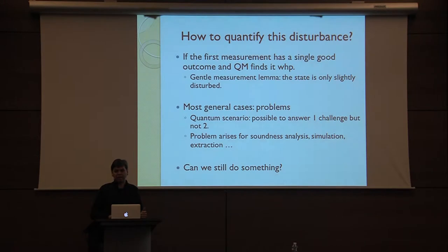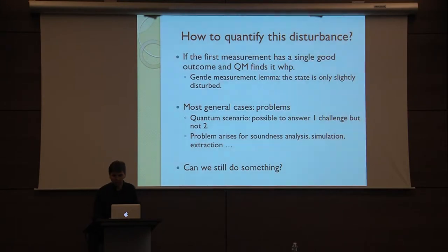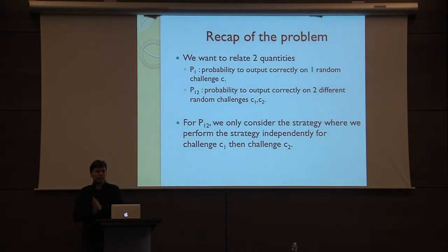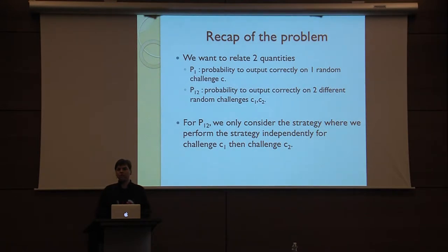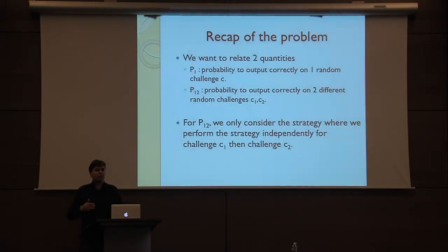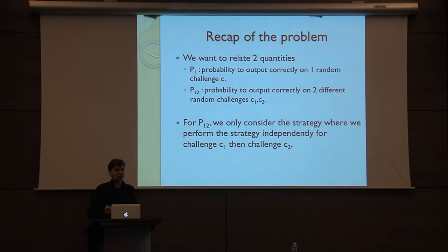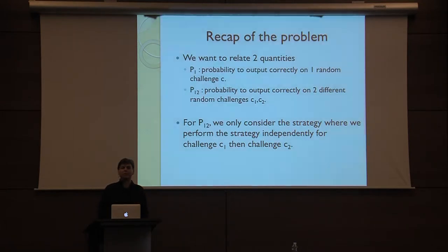So can we still do something? If the most general case is problematic, what are the cases where we can still do something? To recap, we want to relate two quantities: P1, the probability that a quantum algorithm given a challenge gets a good answer, and P12, the probability to output correctly on two different challenges. For P12 we consider the very naive strategy: look at the first challenge, try to answer, then get the second challenge and try to answer. There might be more clever ways, but that will only improve our results, so already with this naive strategy we have some interesting results.